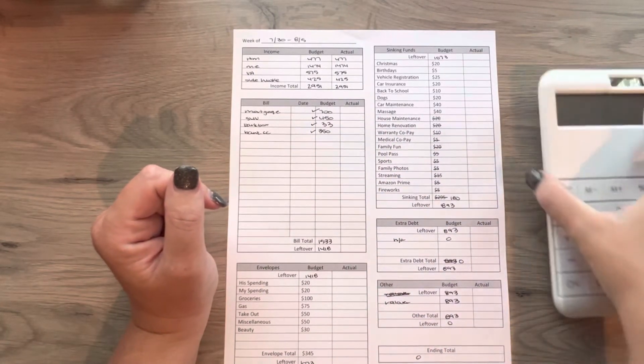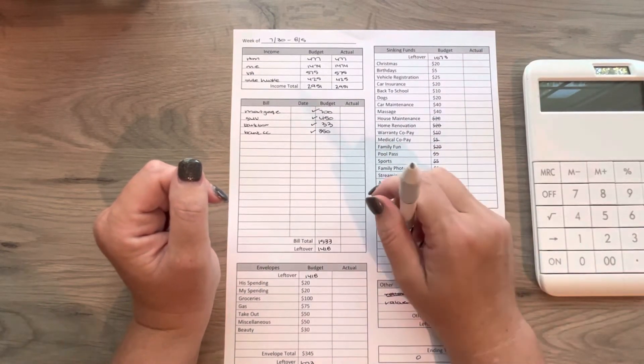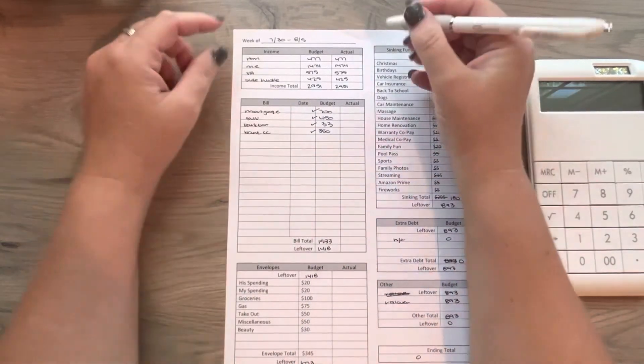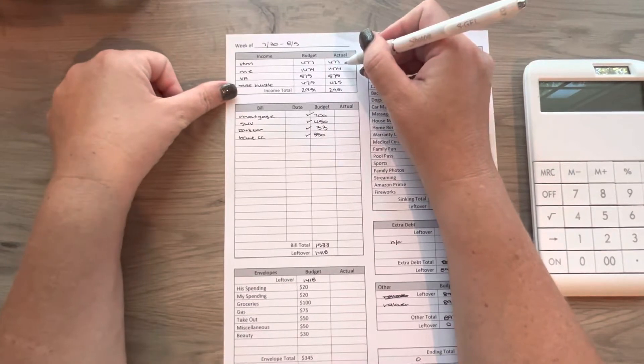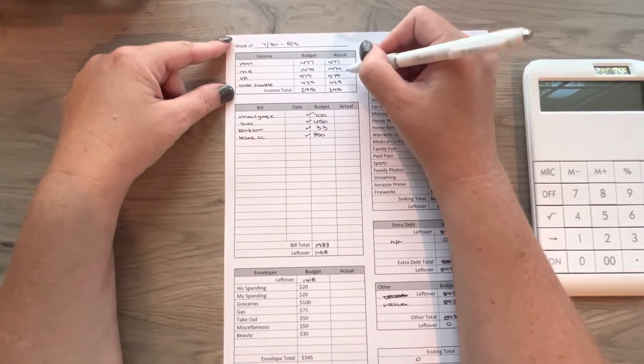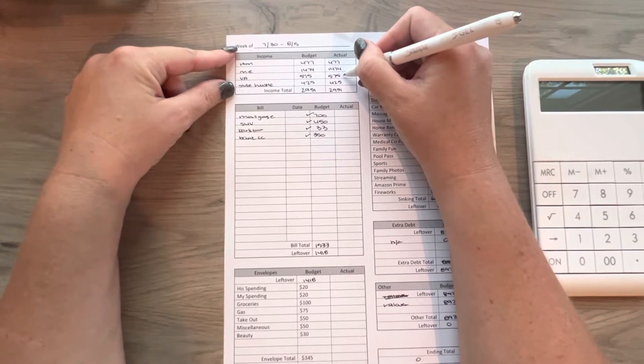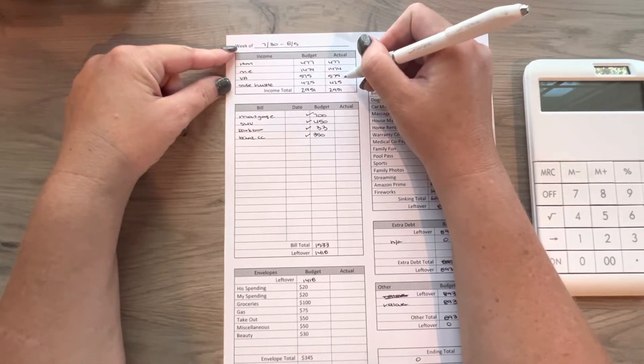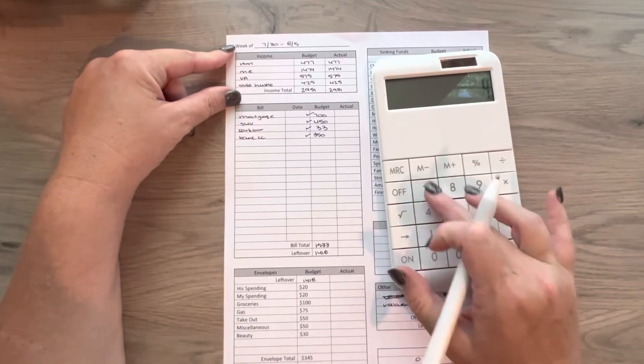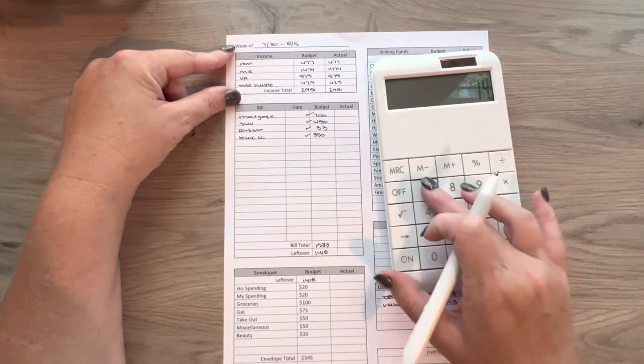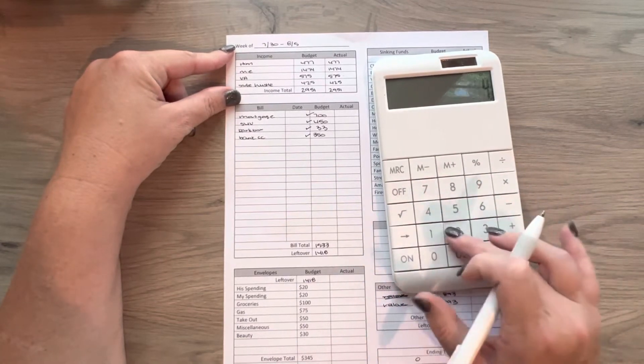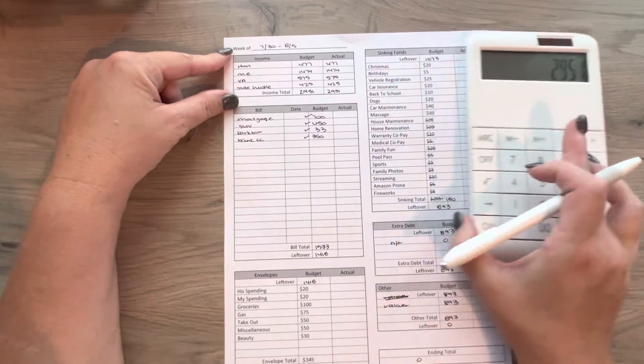so today I'm gonna do my budget with me. So we're gonna go over last week's. He did get paid. This is after taxes, all after all the things. And I got paid. He got paid from the VA because he is a disabled veteran. And then our side hustle. So this is all $2,951. I'm gonna double check math because you just never know. $2,951. Yep. All right.